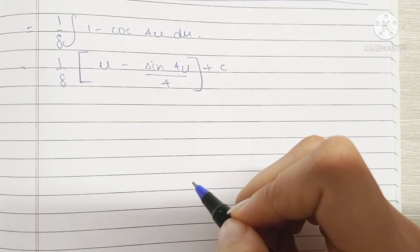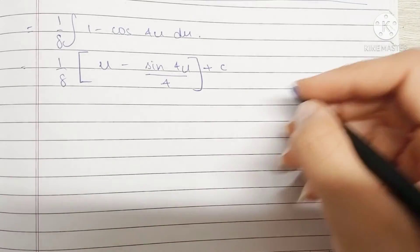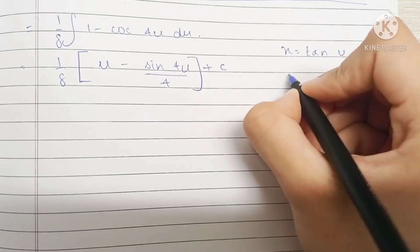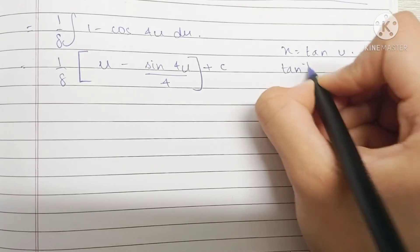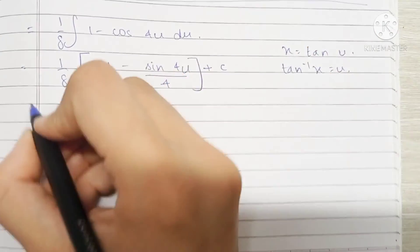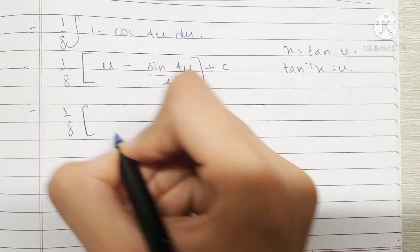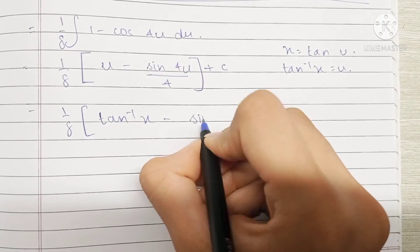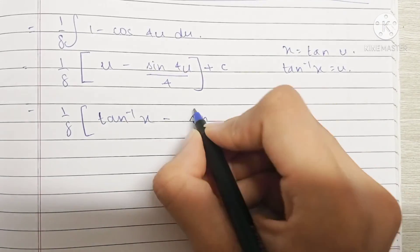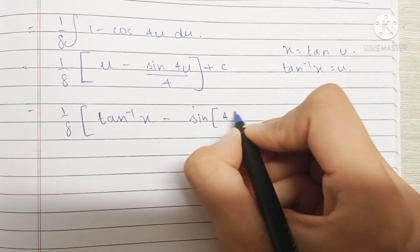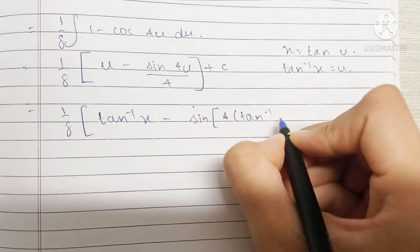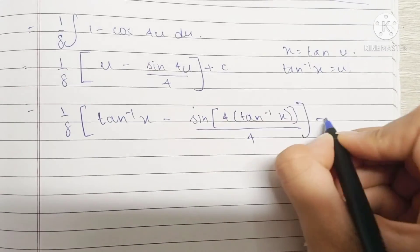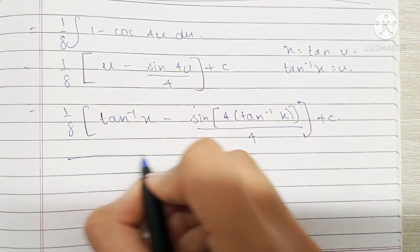Now we are going to write everything back in terms of x. We know that x is tan u, which means the tan inverse of x is u. So the final answer is (1/8)(tan⁻¹(x) minus sin(4·tan⁻¹(x)) / 4) plus C. And that's the final answer.